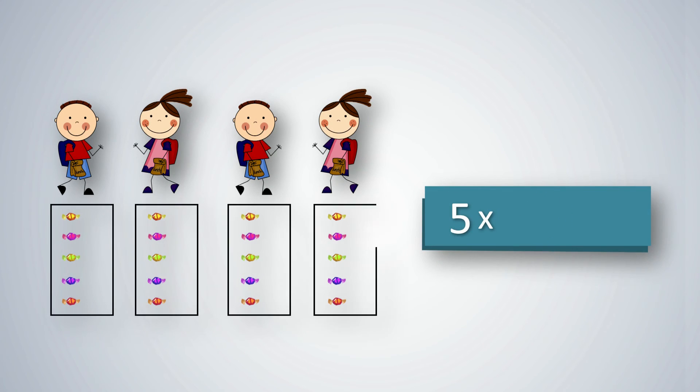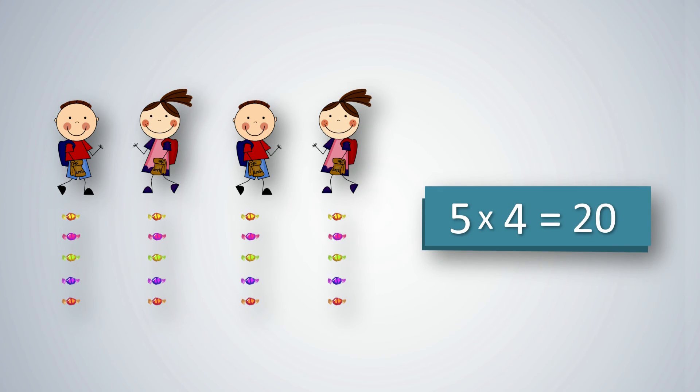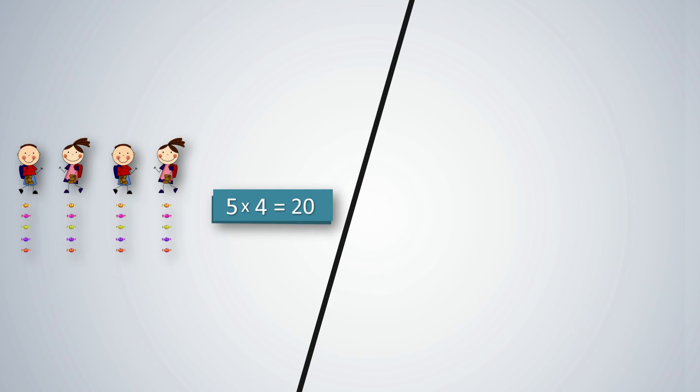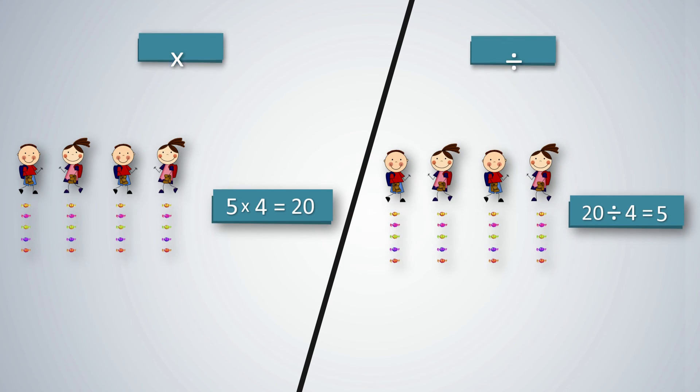5 multiplied by 4 gives the product or the answer, which is a total of 20 chocolates. Thus, for the multiplication fact, 5 multiplied by 4 equals 20, we have the division fact, 20 divided by 4 equals 5.